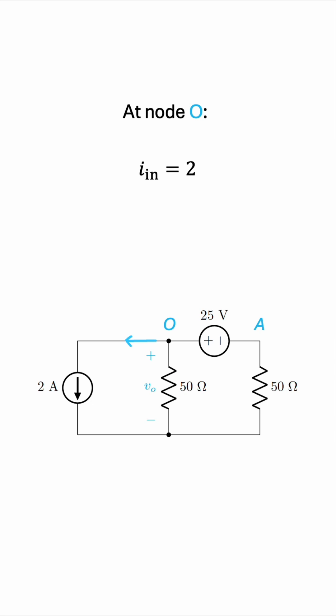What else? We also have this current leaving the node, and by Ohm's law we know that this current must be vo over 50.